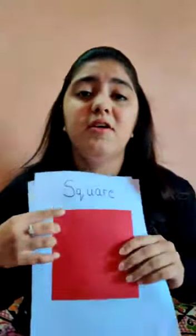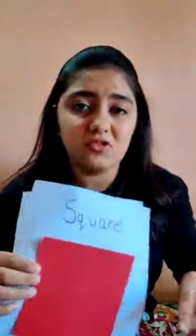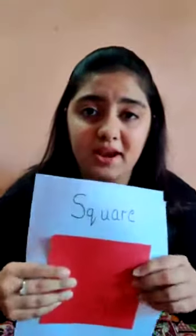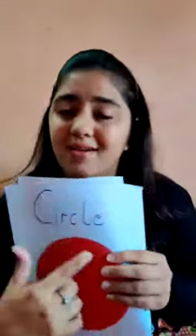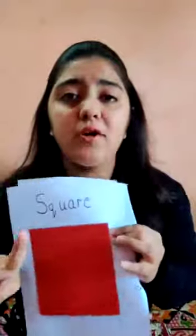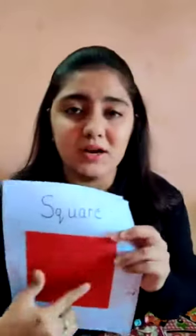So let's revise once again. This is square. This is circle. Circle has no sides — it is round in shape. Square has four sides and it has four corners. This is circle. This is square.